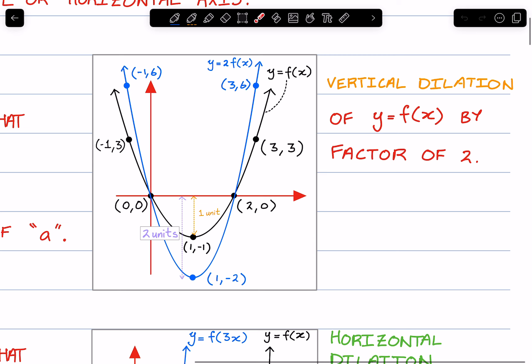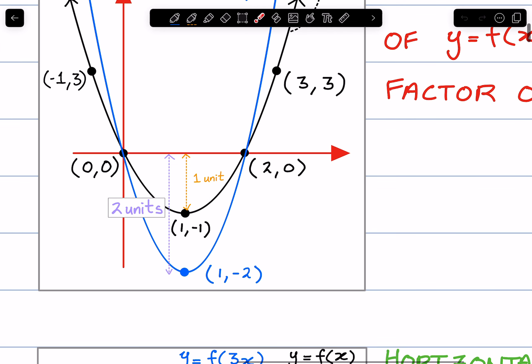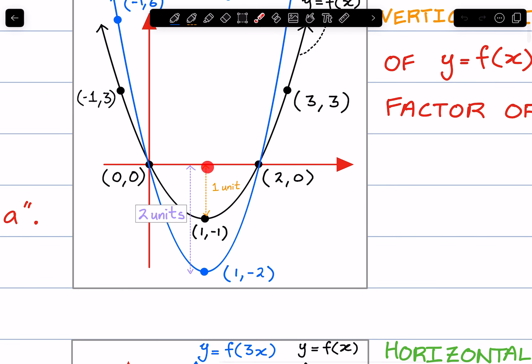So here we have the original graph, f of x, and when we vertically dilate it by a factor of 2, I've emphasized it here, the original graph, its distance to the x-axis of this point is 1 unit.